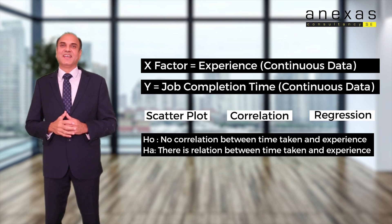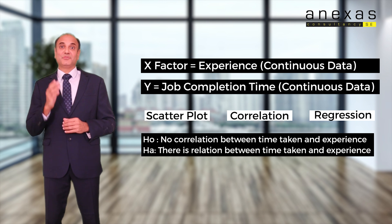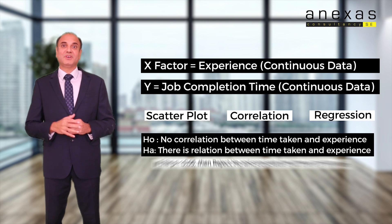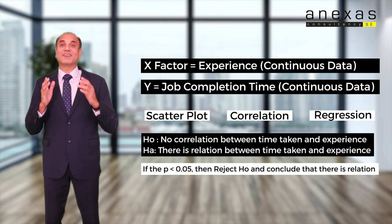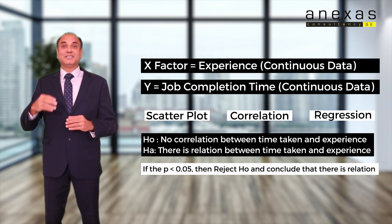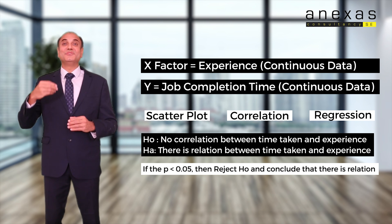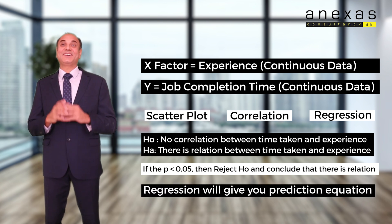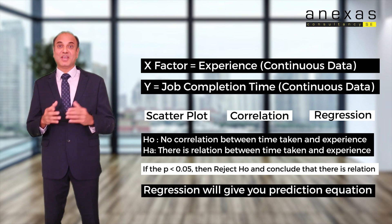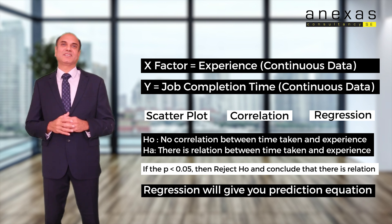And then regression. If you get the p-value less than 0.05, that means there is a strong relation, and you can even do a regression equation — you can create an equation to predict the cycle time taken by an employee based on their experience.